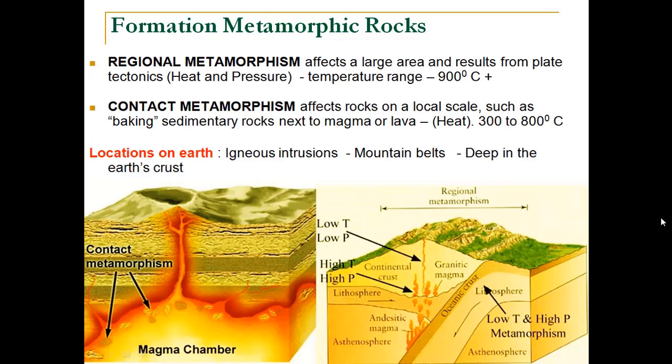Now we will see the ways by which metamorphic rocks are formed. First, regional metamorphism. The name itself suggests that such metamorphism occurs at a large scale — mainly at plate boundaries where two plates meet, with a tremendous amount of pressure and heat where temperature ranges from 900°C and above. As seen in this diagram, the two plates converge at one point, rub against each other, resulting in tremendous heat and pressure, and the resultant rock converts into a new metamorphic rock. Such rocks are formed at large scale at plate boundaries or near mountain belts.